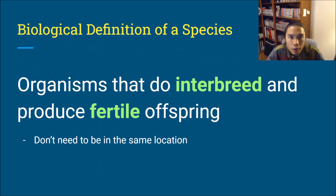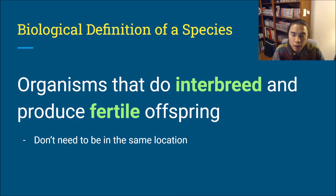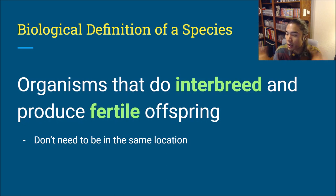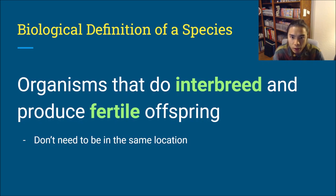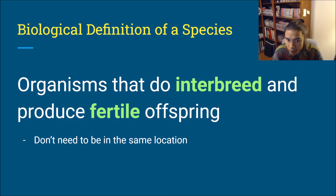Let's start out with the biological species concept, which states that a species entails organisms that do interbreed and produce fertile offspring. Interbreed — inter meaning between two separate entities — means something mating with itself and producing a new thing would not count. Interbreeding needs to involve two separate organisms, and they need to produce fertile offspring, meaning their offspring have to be able to produce offspring themselves.